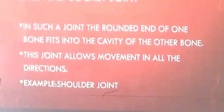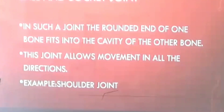We have different kinds of joints in our body. The first is the ball and socket joint. In such a joint, the rounded end of one bone fits into the cavity of the other bone. This joint allows movement in all directions. We have a ball and socket joint in our shoulder.